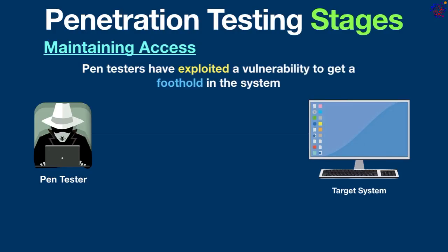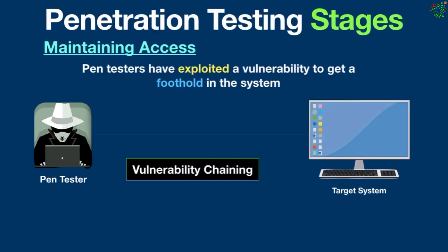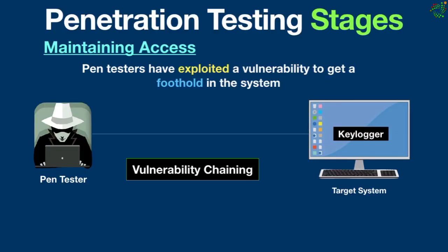The fourth stage is maintaining access. Once pen testers have exploited a vulnerability to get a foothold in the system, they try to move around and access even more of it. This stage is sometimes called vulnerability chaining, because pen testers move from vulnerability to vulnerability to get deeper into the network. For example, they might start by planting a keylogger on an employee's computer; using that keylogger they can capture the employee's credentials, and using those credentials they can access a sensitive database. The main goal at this stage is maintaining access and escalating privileges while evading security measures.